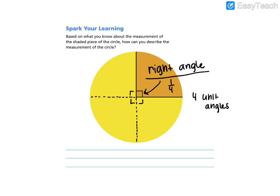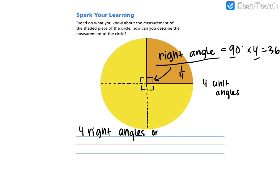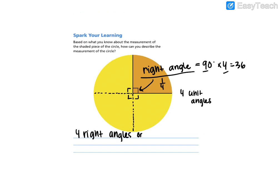What do you know about a right angle? A right angle is equal to 90 degrees. So we know the measure of a circle will be four right angles, or 90 times four, which is 360 degrees.